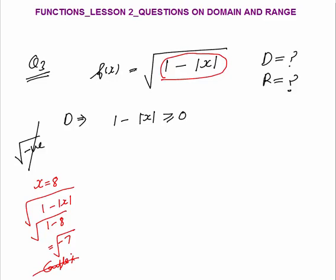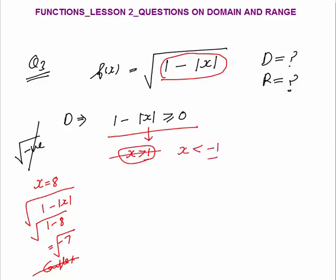So very important: domain means the value of input x such that output is a real number. So 1 minus mod x must be greater than or equal to 0 — then only output will be a real number. Now what values can I put for x? I can't put x greater than or equal to 1, because if x ≥ 1 the expression becomes negative. I can't put x less than minus 1 either, because mod is always positive.